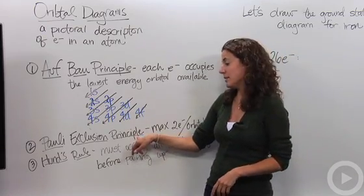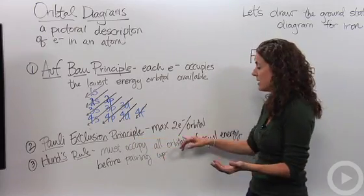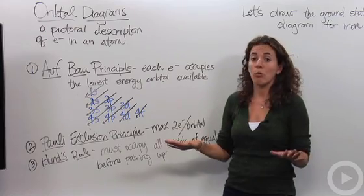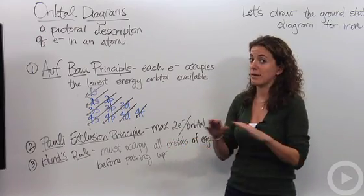The second rule that we're going to talk about is the Pauli exclusion principle, which basically states that there are maximum two electrons per orbital. So an orbital can only hold two electrons and that's it, no more. It can hold one, but it cannot hold more than two.